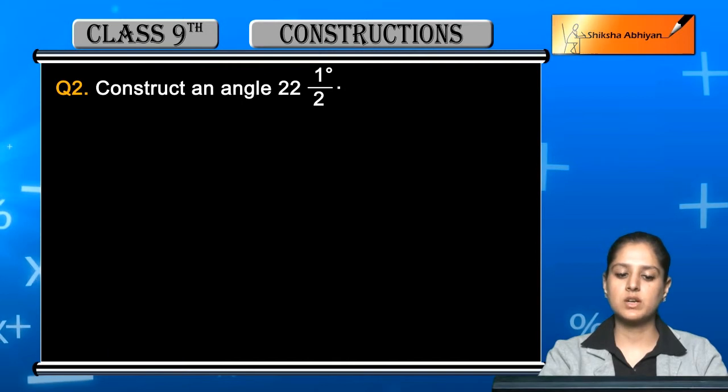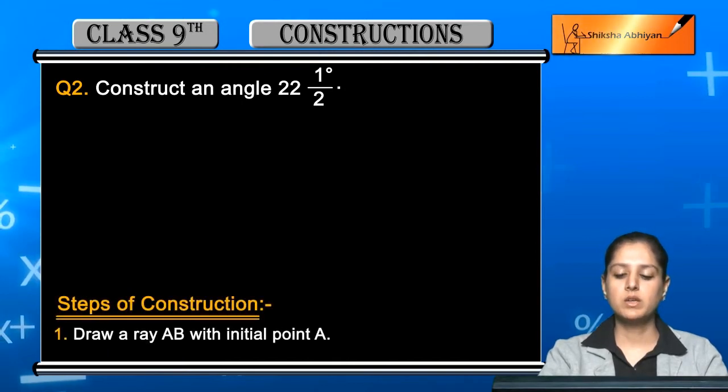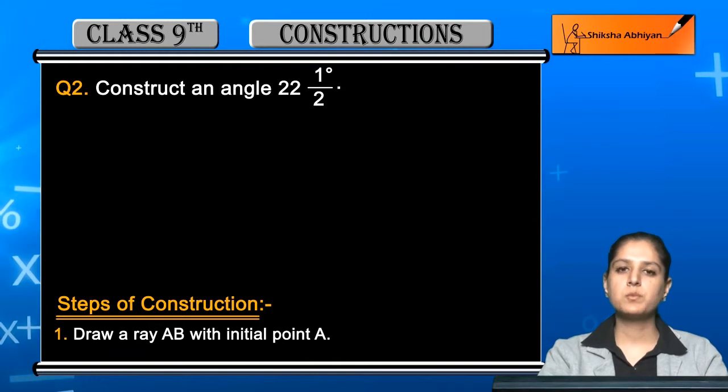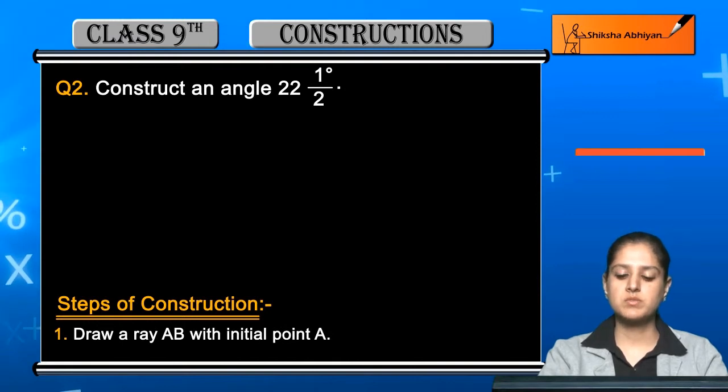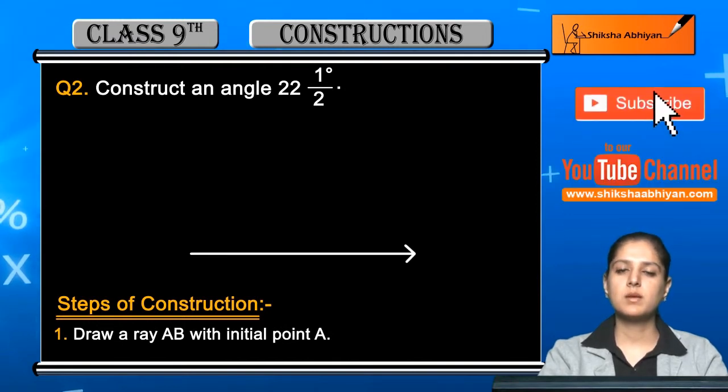First step: Draw ray AB with initial point A. We will construct the 22 and a half degree angle at point A. So first, draw a line AB and label both ends, then we will proceed further with this.